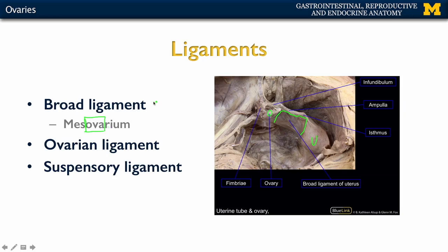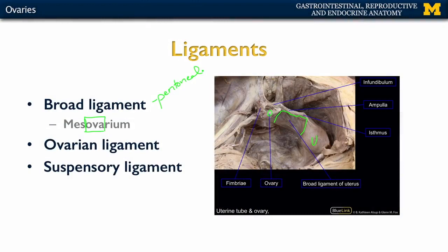The broad ligament is going to be peritoneal, so we do have peritoneum in this area. It's not going to completely encompass the structures like we see with the gastrointestinal system, but there is a very close association between the ovaries and the peritoneum. It's not completely encased or surrounded by peritoneum like we have with the uterine tubes.